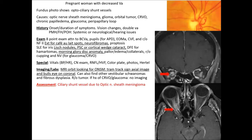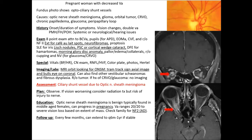Plan for optic nerve sheath meningioma: observe; if vision is worsening, consider radiation — but in a pregnant woman, you'd avoid radiation. Treatment carries risk of injury to the optic nerve. Optic nerve sheath meningioma is benign, typically found in middle-aged females, and can progress in pregnancy. Vision can range from 20/20 to severe loss depending on extent. Check family for NF2 (autosomal dominant) and follow up every few months.